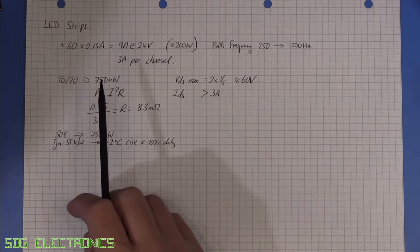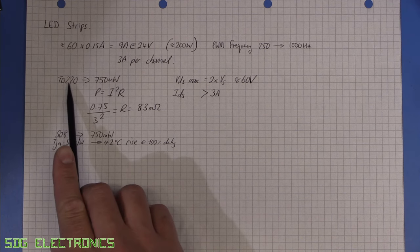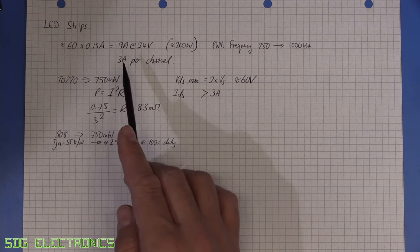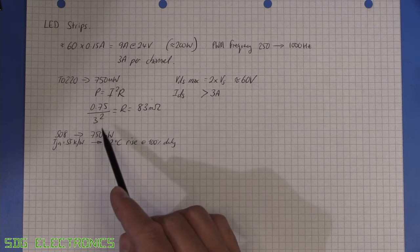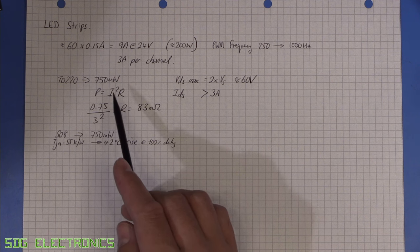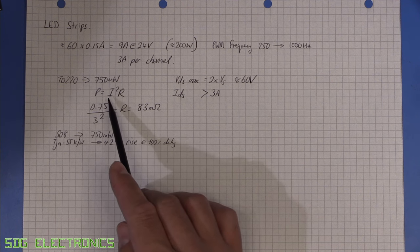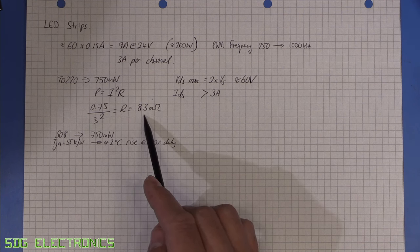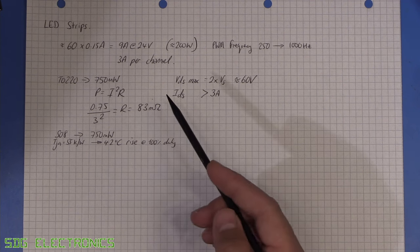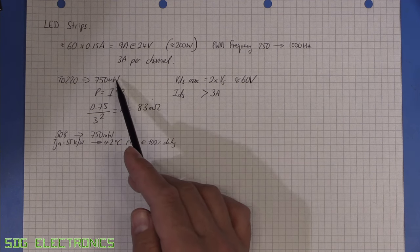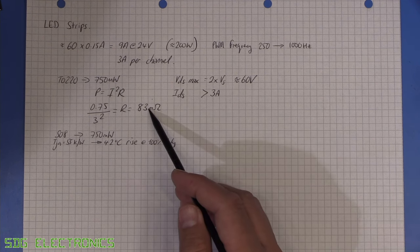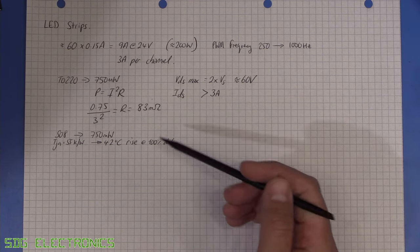So I've just jotted down a few numbers. Now our TO220 through-hole package can easily handle 750 milliwatts. We know that it would be about three amps per channel so we can plug some numbers into our power equation here and it tells us the resistance 83 milli-ohms. That's the maximum resistance of our MOSFET when turned fully on that we want to keep the power dissipation below 750 milliwatts. Now it's slightly more complicated than that but that's a starting point and we'll talk about some of the complications in a moment.